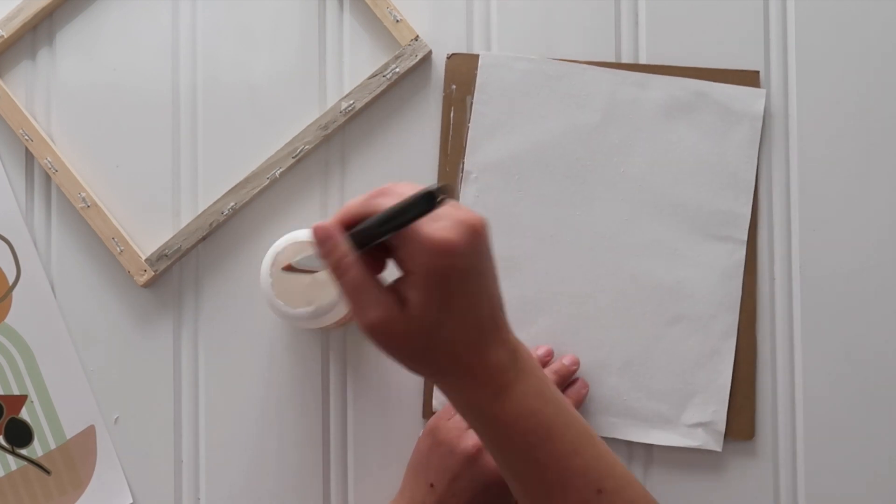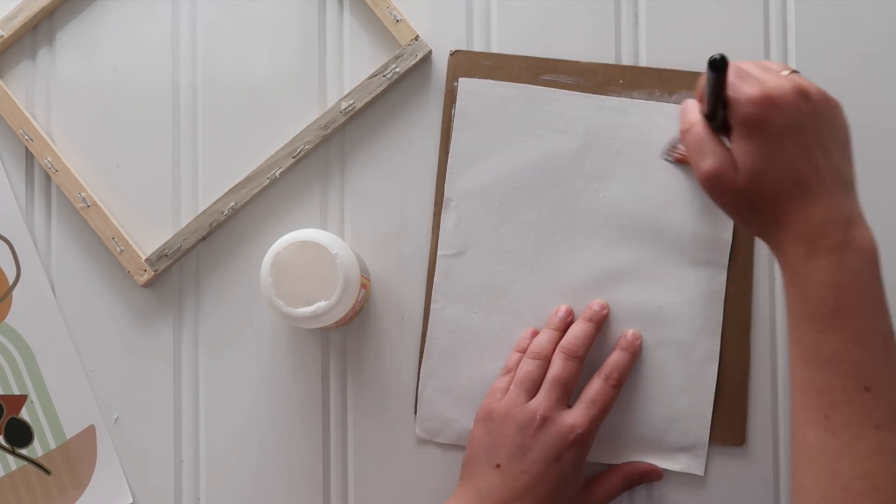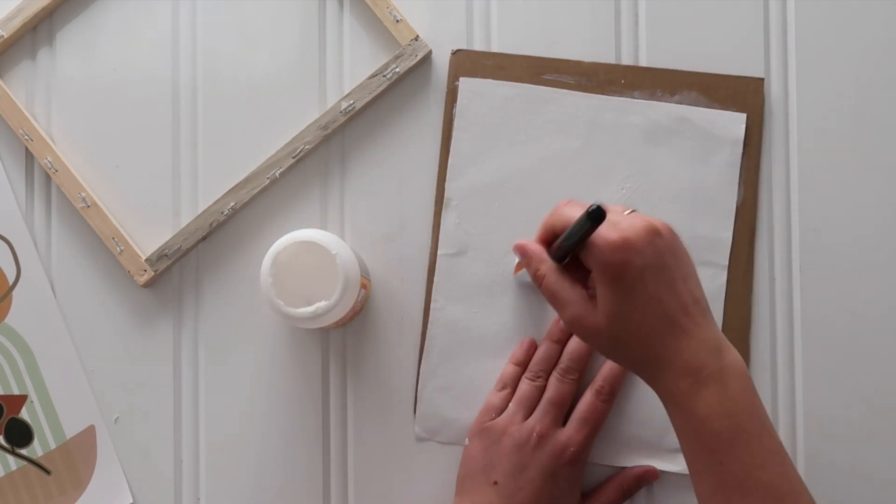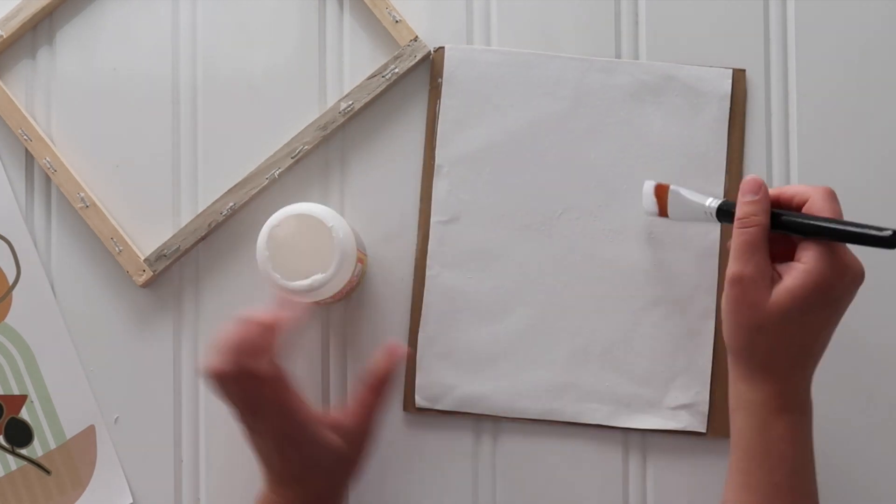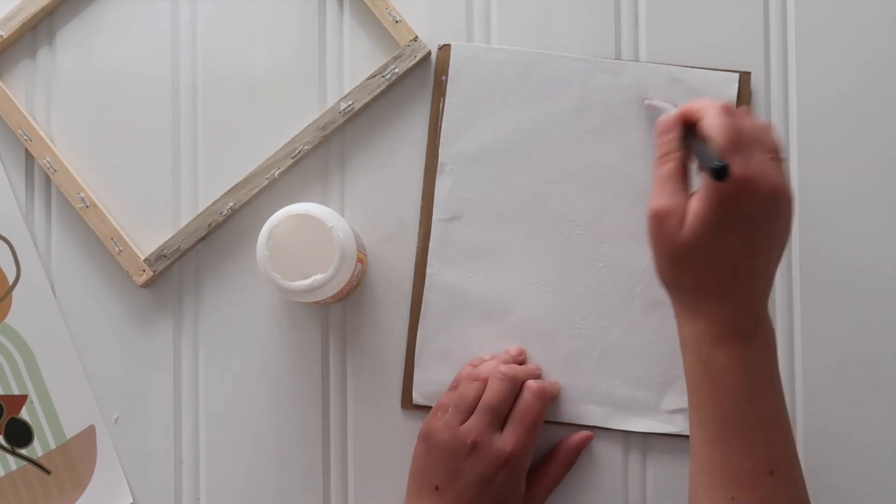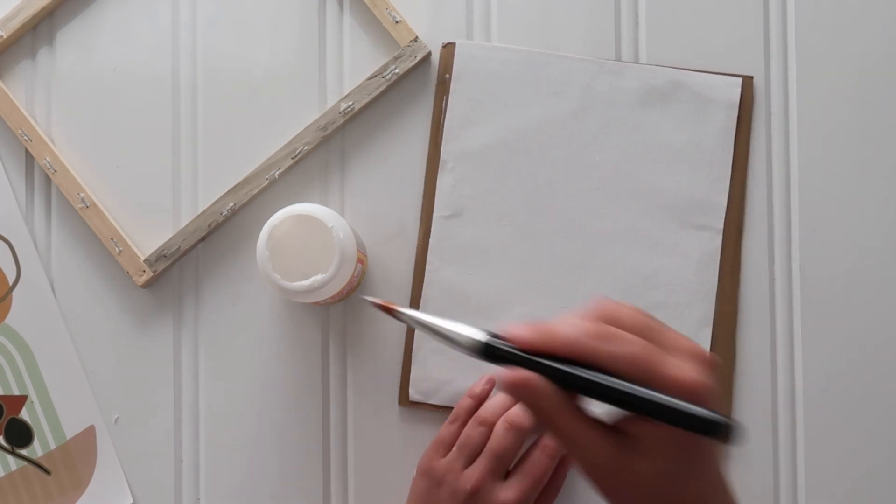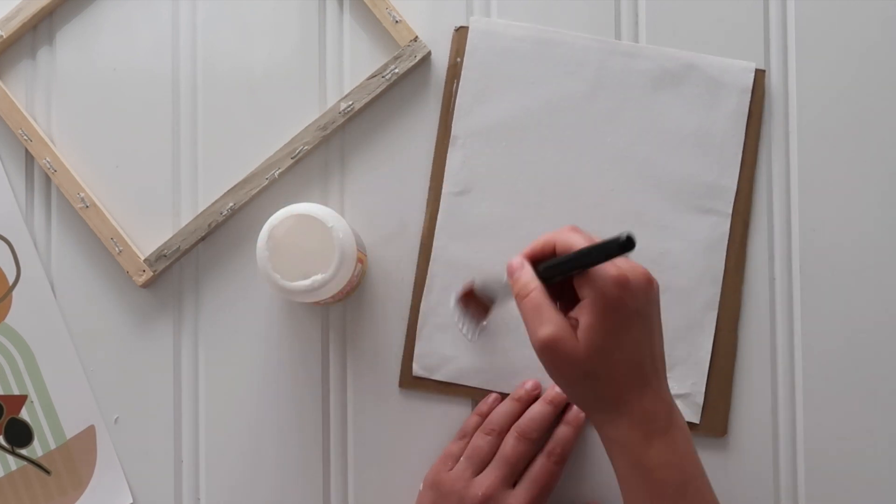Yes, I know I only needed to Mod Podge the decal, but I wanted a consistent finish on my project. I knew that if I didn't Mod Podge the entire canvas, I would have differences in finish or in sheen between areas that were Mod Podged and areas that were just the canvas. So do a solid coat of Mod Podge across that whole canvas and then let it dry.